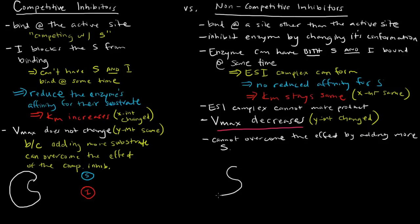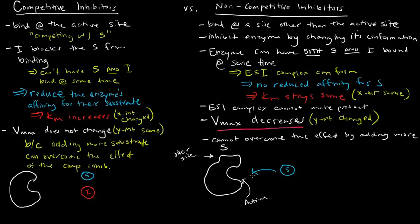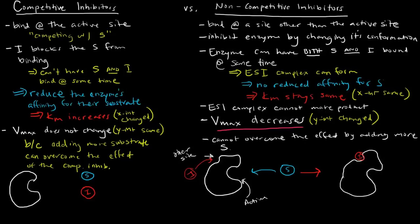For a non-competitive inhibitor, imagine an enzyme with an active site here and another binding site elsewhere. The substrate — circular — fits at the active site, and the inhibitor fits at the other site. When both bind, we get the enzyme-substrate-inhibitor complex, which is rendered pretty much useless.